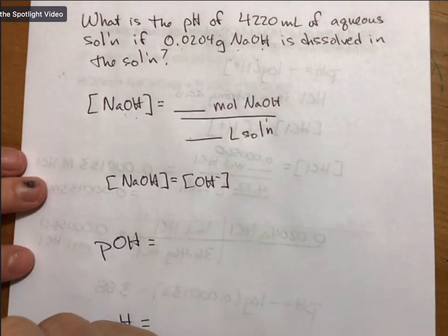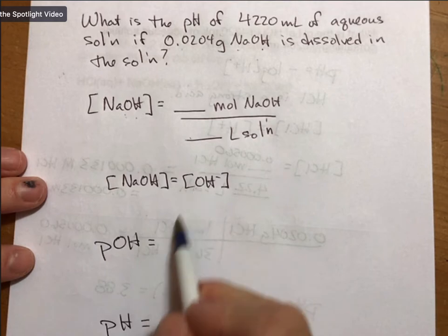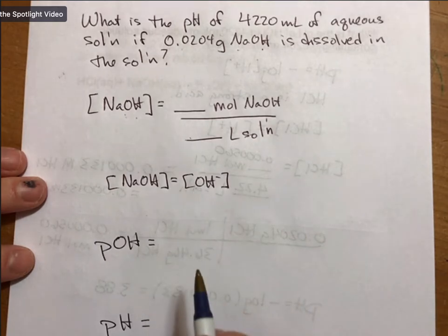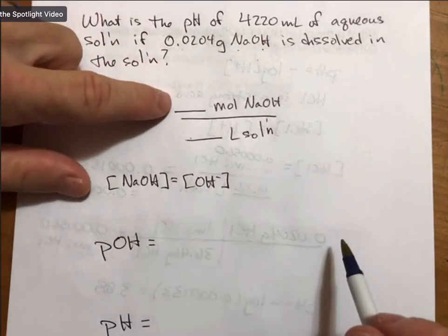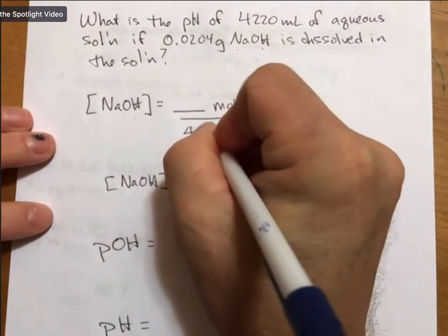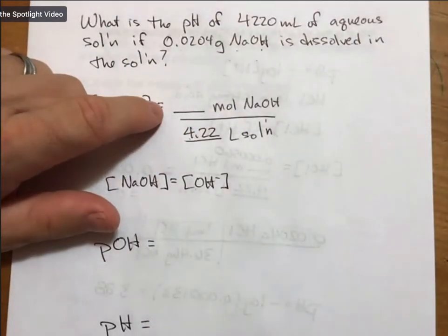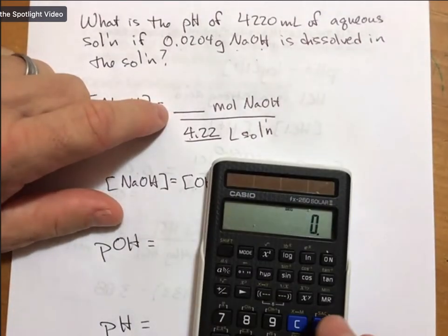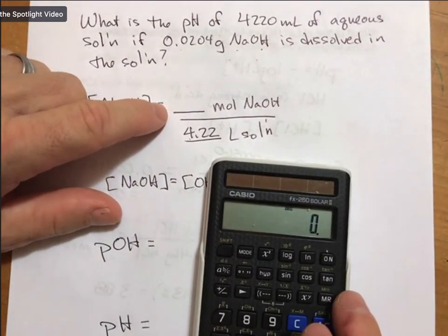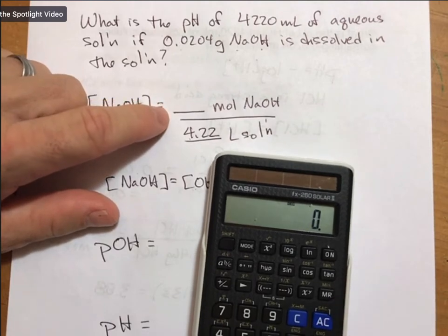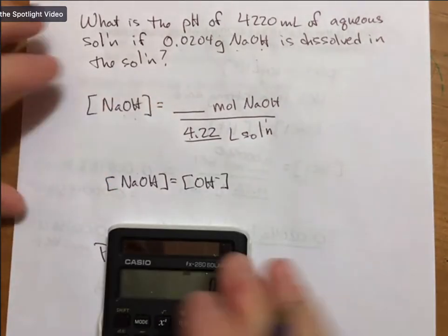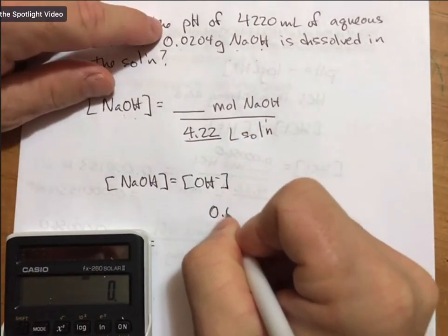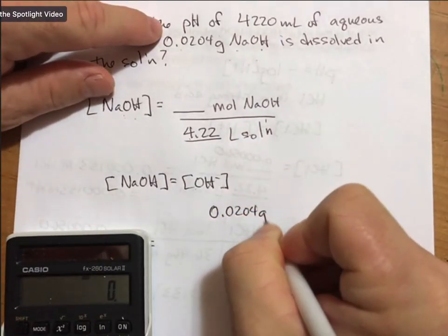We know our liters is going to be 4.22. Our moles this time require that we find the molar mass of sodium hydroxide, which I think is exactly 40.00. So we know that we have 0.0204 grams.